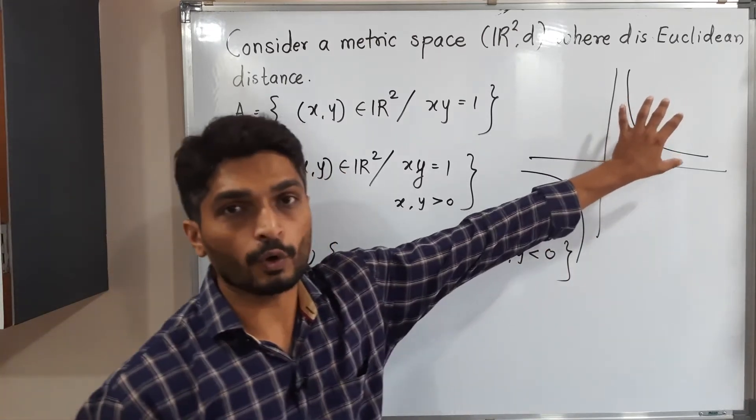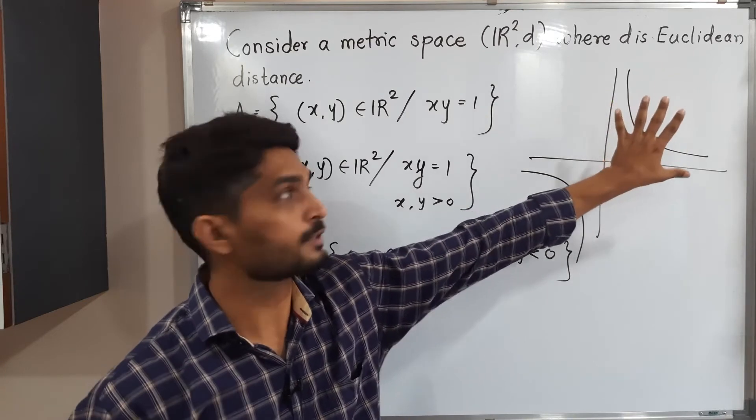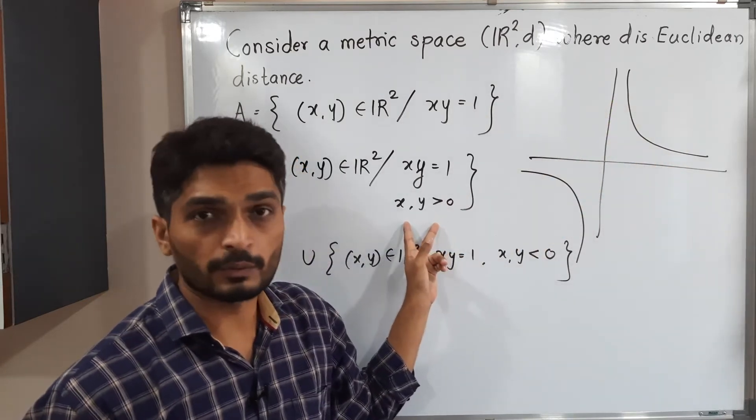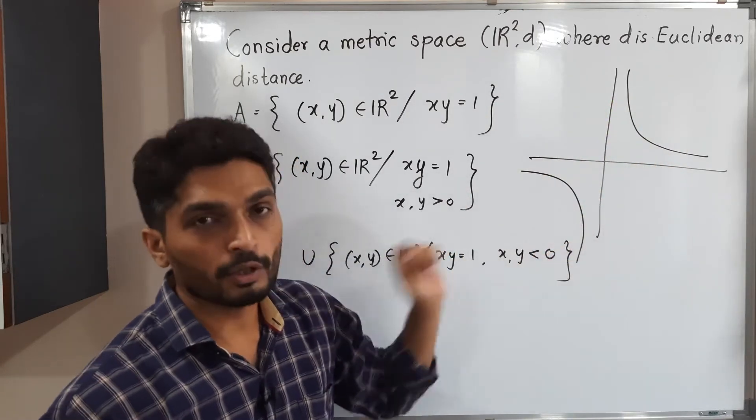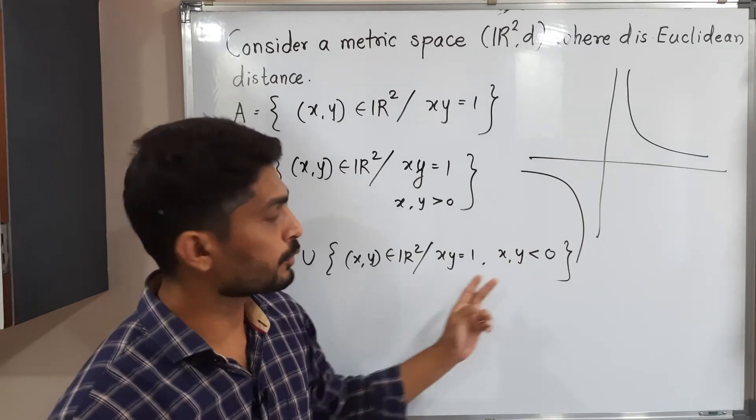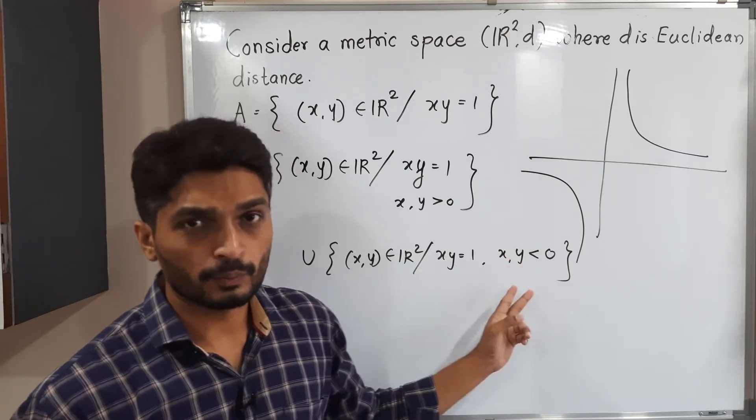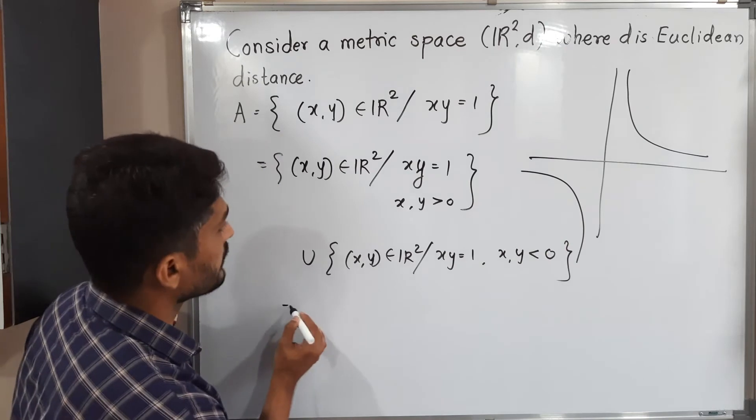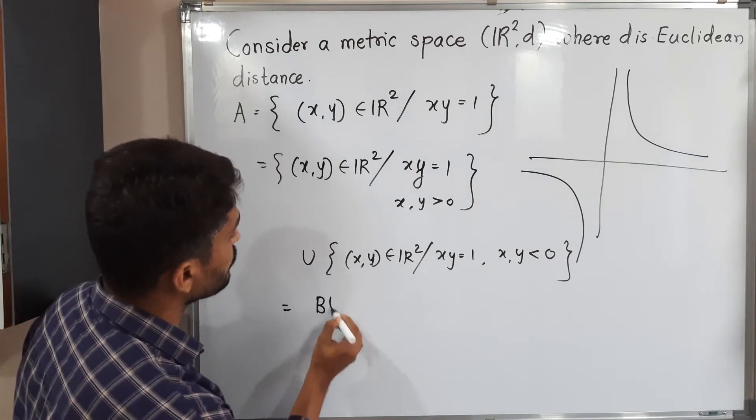That means in first quadrant the part of hyperbola lies where X and Y both are positive. And the second part of hyperbola lies in third quadrant where X and Y both are negative. So this is equal to B union C.